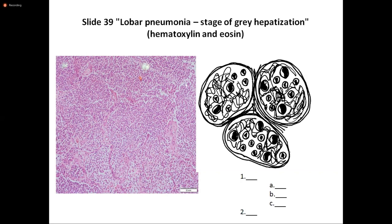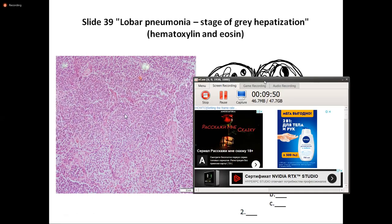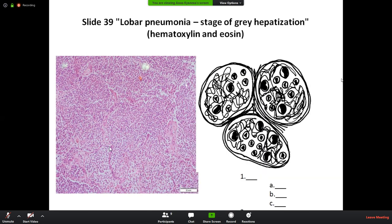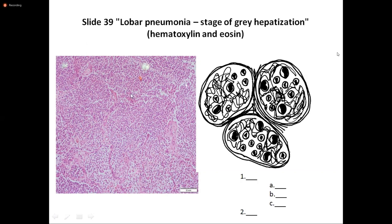Page number 73, picture number 48: fibrinous exudate in the lumen of alveoli. We can see alveoli — one, two, and three alveoli. Inside the alveoli we can see exudate. This is fibrinous exudate in human alveoli.